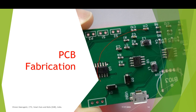Once prototyping and testing are done, the final task is PCB fabrication. This is how the printed PCB will look. After the product is complete, we place it in the casing. This is how the hardware part needs to be done very perfectly.